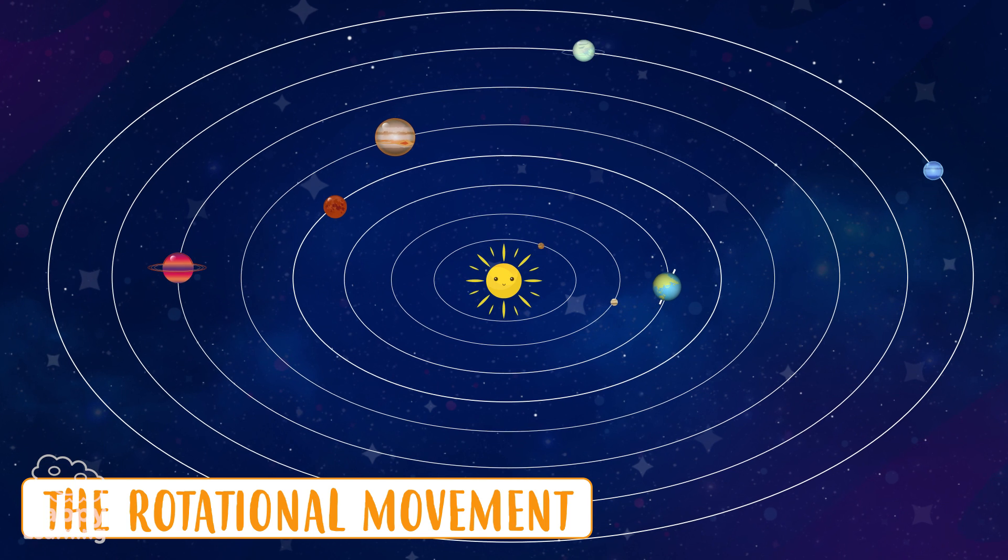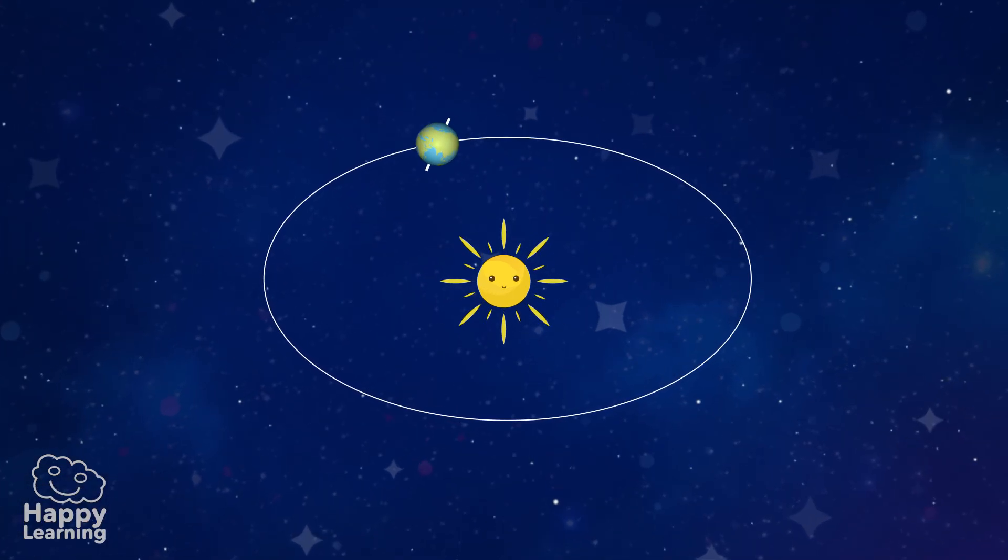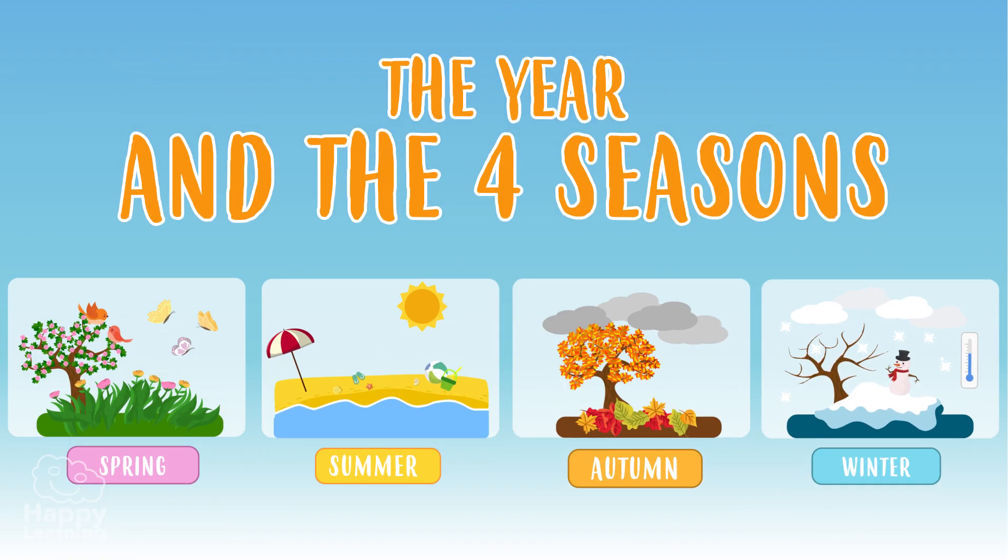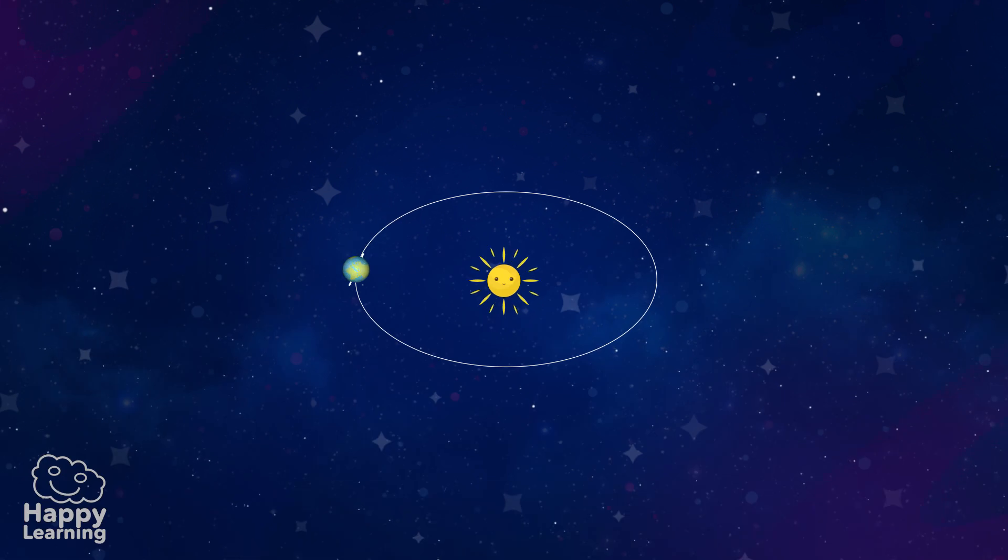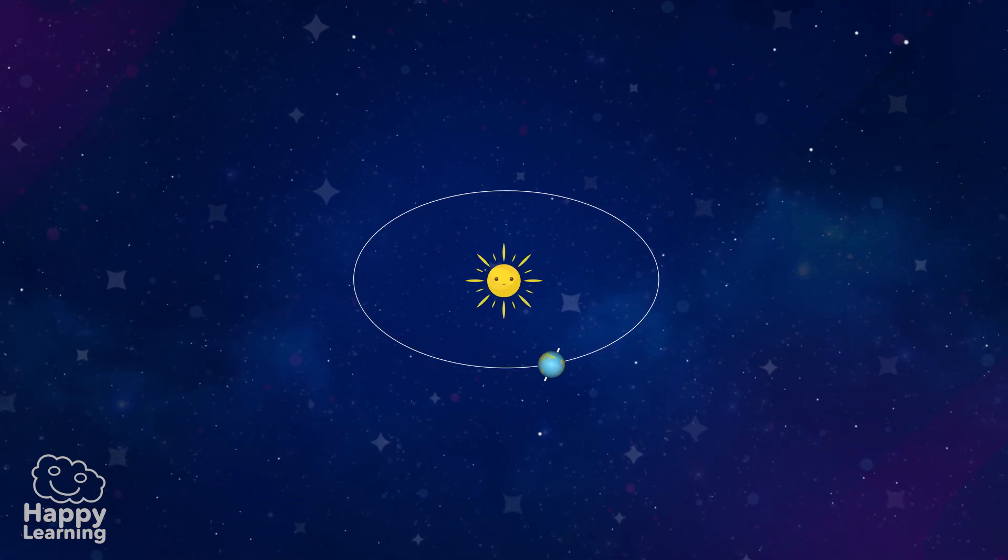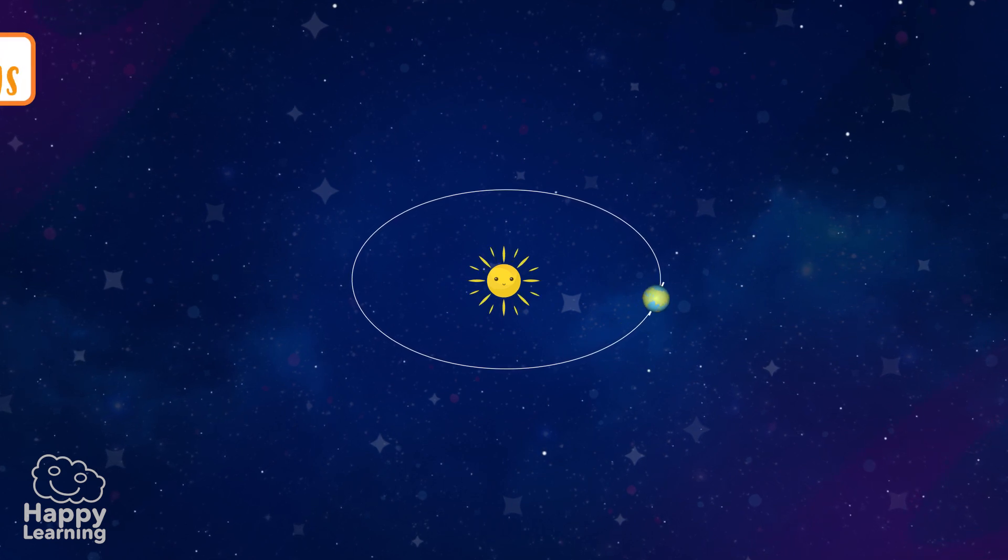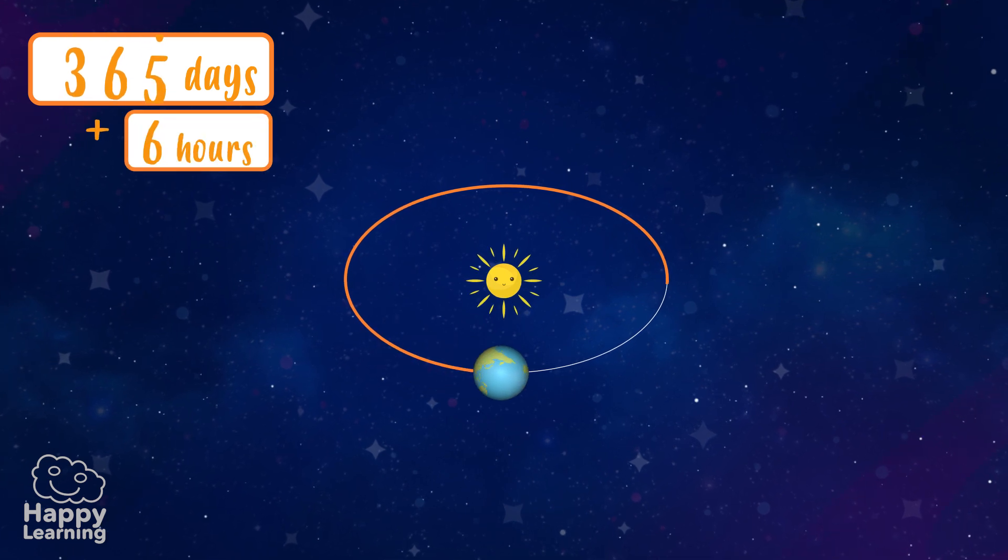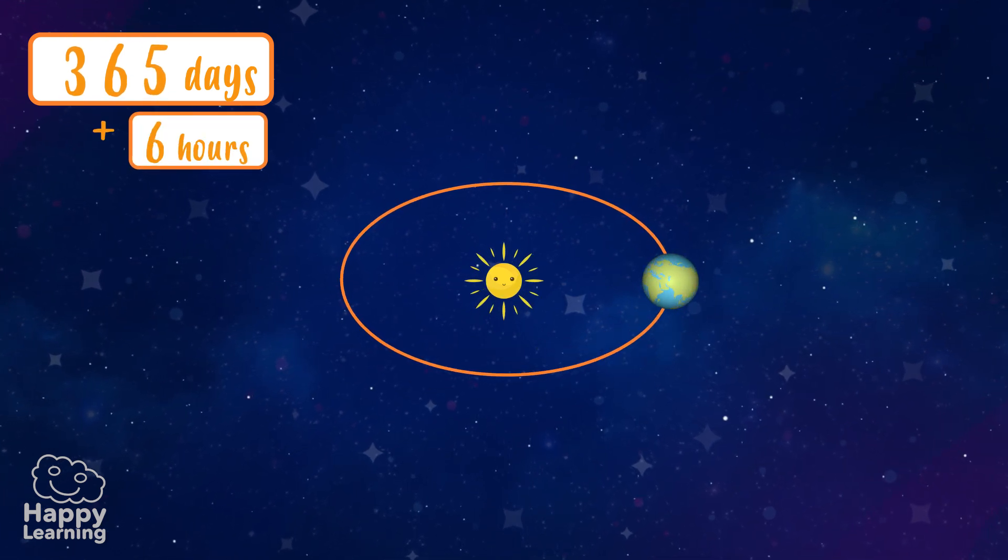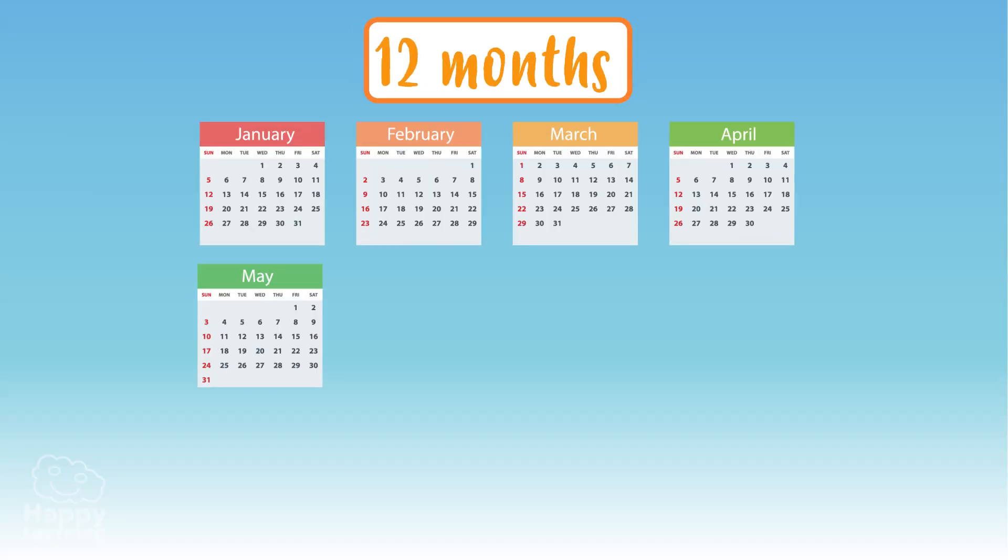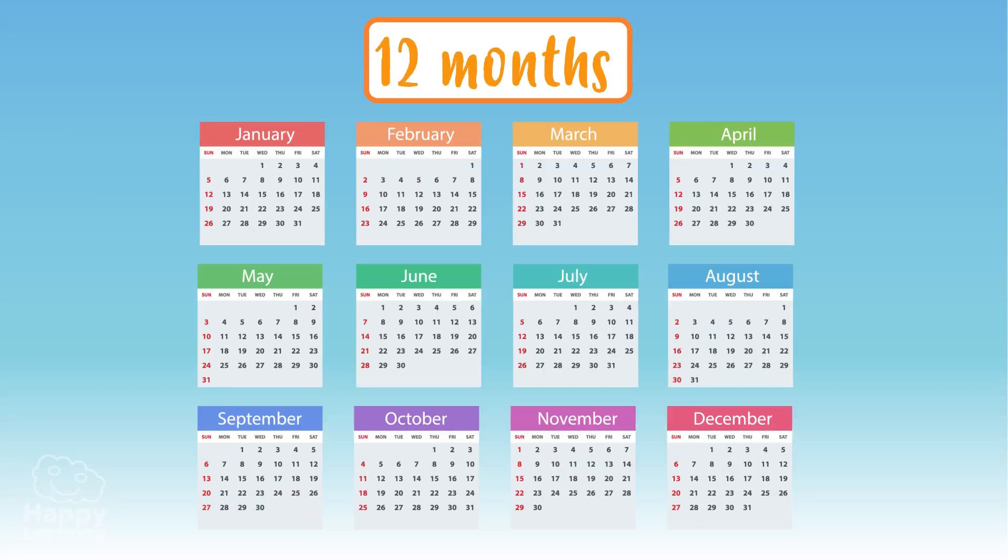And it is on Earth where the rotational movement causes the four seasons. Do you know exactly how long it takes the Earth to do a single rotation around the Sun? Exactly, it takes 365 days and 6 hours, which is the same as one year. There are 12 months and four seasons in a year.